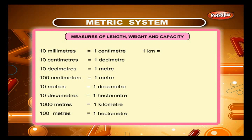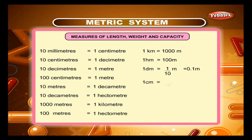1 dm is equal to 1/10 m, which equals 0.1 m. 1 cm is equal to 1/100 m, which equals 0.01 m. 1000 m is equal to 1 km.